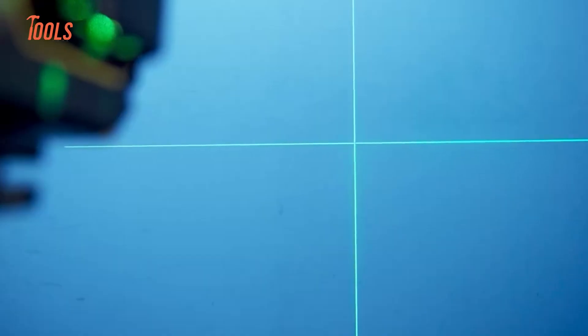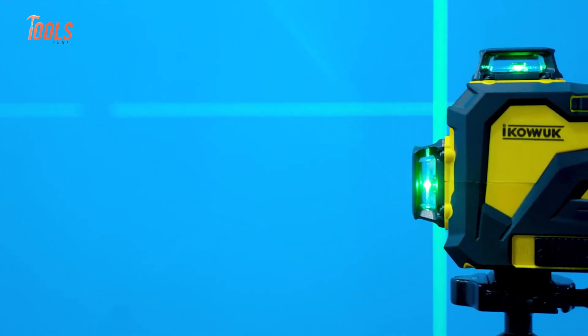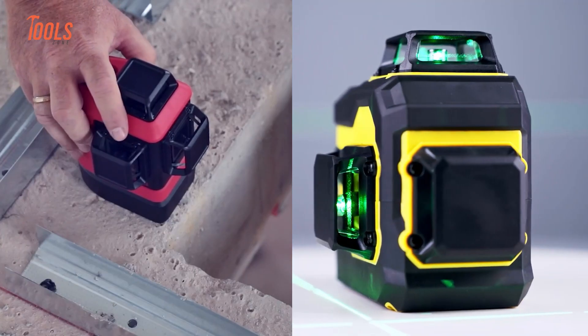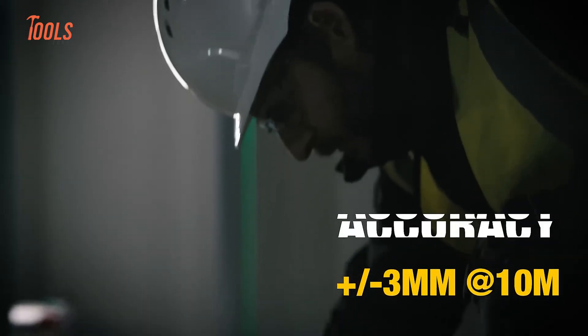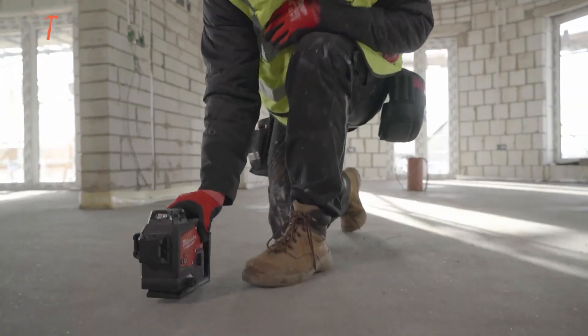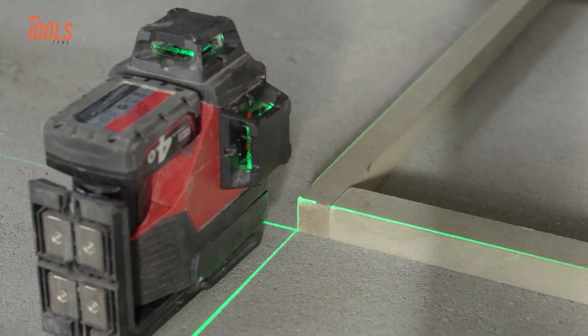The first and most important difference lies in accuracy. You see, when you pay more, what you're really paying for is precision. A basic or budget laser level might have an accuracy of around ±3mm for every 10 meters. That means by the time you extend that line across a big room or wall, it could be off by quite a bit.